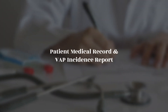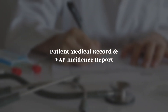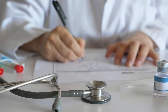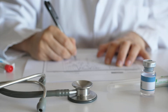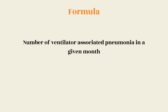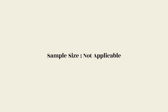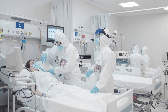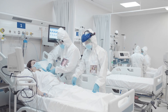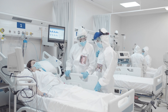Source of data: patient medical record and VAP incidence report. Indicator monitored by: Infection Control Nurse. The formula is — Numerator: number of ventilator associated pneumonia cases in a given month; Denominator: total number of ventilator days in that month, multiplied by 100. Sample size: not applicable. Note: a VAP culture report is mandatory to ascertain the case.